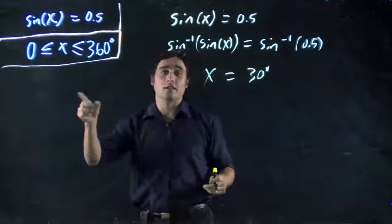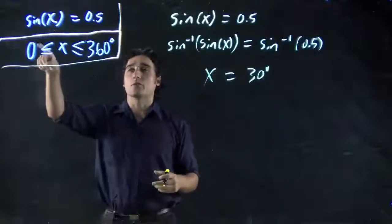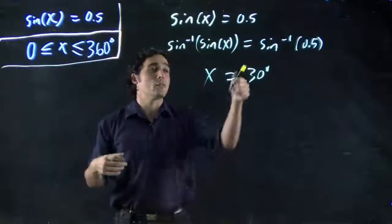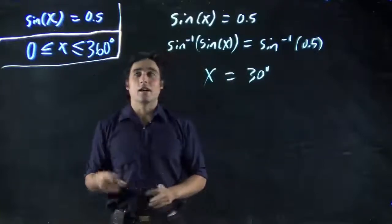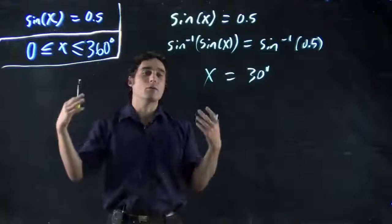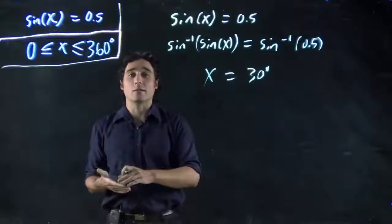Make sure, by the way, you're working in the right units. In this case, we're given between 0 and 360 degrees. We want an answer in degrees. Make sure your calculator's in degree mode. Very common mistake. If we had 0 to 2 pi, we would be working in radians. So then you switch your calculator to radian mode.